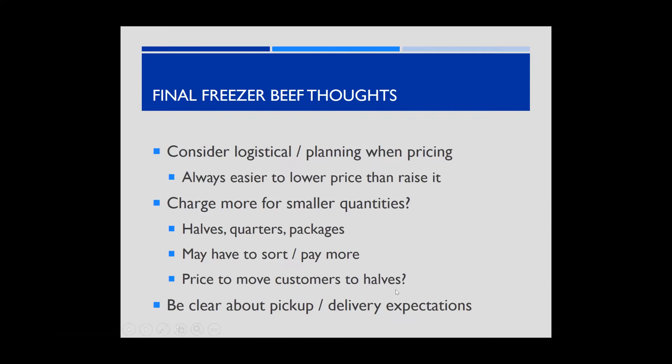Kenny and Greg price to move customers toward halves. Two incentives: halves are cheaper per pound, and half-buyers have full control of cutting instructions. With a quarter, cutting must be coordinated with the other quarter buyer. Once customers commit to halves, they're much more self-sufficient — they coordinate pickup and cutting instructions on their own. Be very clear about pickup and delivery expectations upfront.